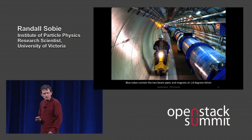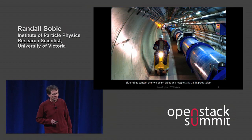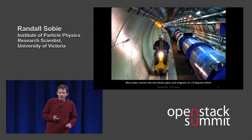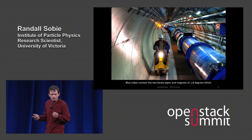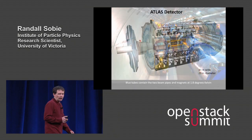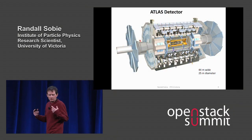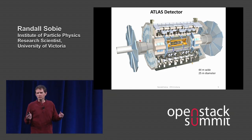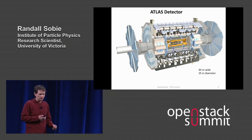The Large Hadron Collider is a tunnel — 27 kilometers. You need transportation to get around. The blue pipes contain the magnets and two beam pipes for the protons to circulate opposite each other. It's also at 1.8 degrees Kelvin, so I think it's the biggest refrigerator in the world. At certain points along the ring we have detectors. This is the Atlas detector; there's another large detector called CMS, and then two other specialized detectors as well.